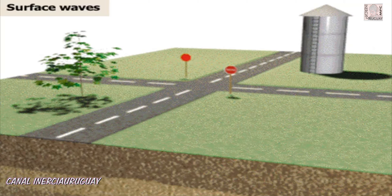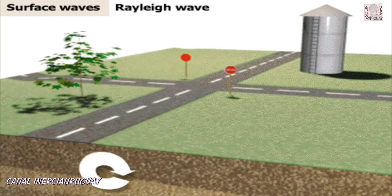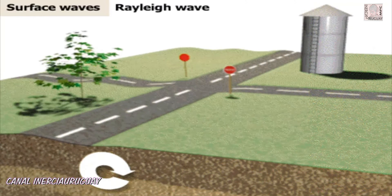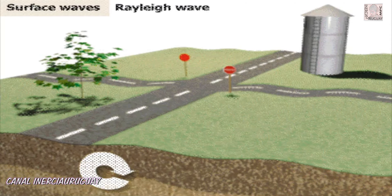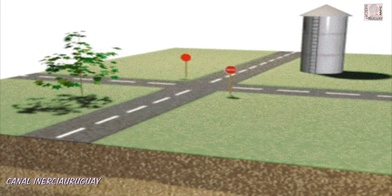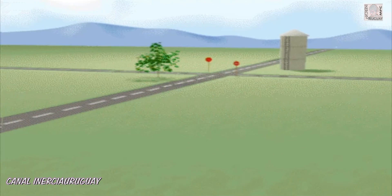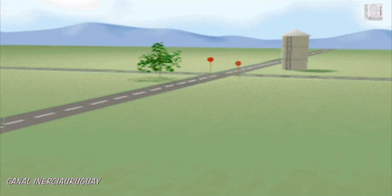The second type of surface wave is called a Rayleigh wave. It moves the surface of the earth up, forwards, down and back in a circle. It can cause damage by knocking buildings off their foundations. In most earthquakes, combinations of love and Rayleigh waves cause the most destruction because the ground shakes up and down and side to side at the same time.